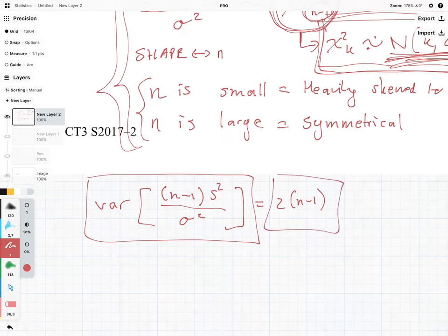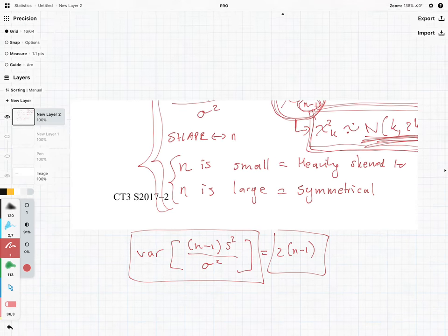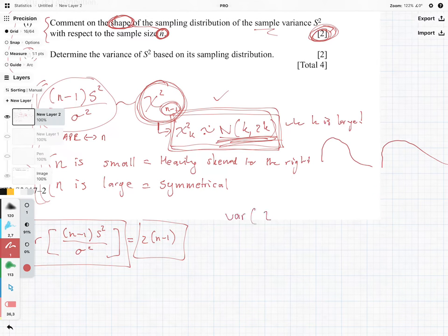We are going to go slowly just so that everyone is on the same page. We're taking the variance of this side, and if we're taking the variance of the chi-squared, we know that the variance of chi-squared with n minus 1 is equal to 2n minus 1. That is how we got our answer.